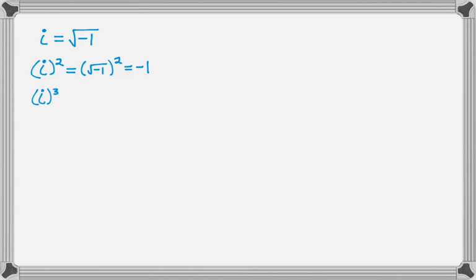Let's cube it. Now that I know that i squared is negative 1, I can make i cubed into i squared times i to the first. Remember, if you have the same base, you add the exponents. So i squared times i to the first gives us i cubed. I just figured out that i squared is negative 1, so that's really negative 1 times i, which is just negative i. So i cubed is always going to be equal to negative i.